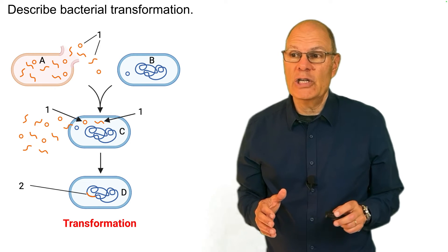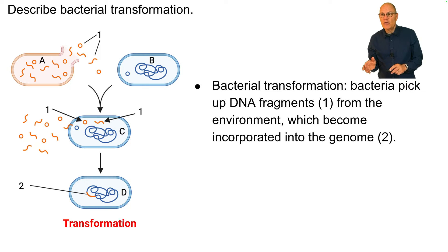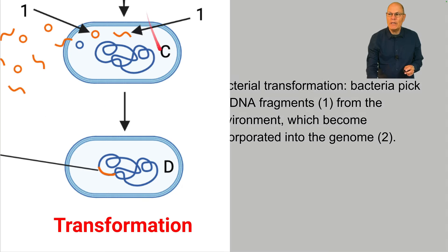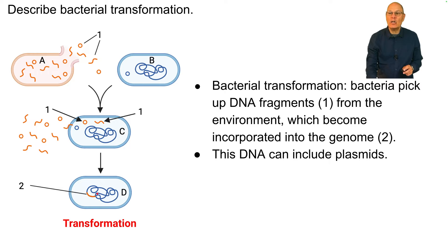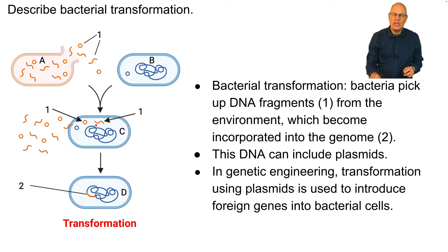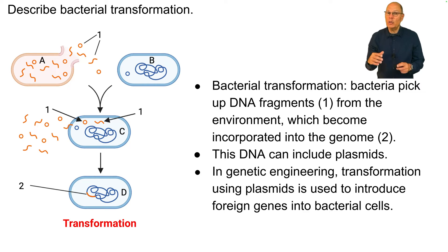Describe bacterial transformation. In bacterial transformation, bacteria pick up DNA fragments from the environment, and those DNA fragments enter into the cell and become incorporated into the genome. This DNA can include plasmids — here's a circularized piece of DNA, a plasmid, being incorporated into the cell. In genetic engineering, transformation using plasmids is used to introduce foreign genes, including human genes, into bacterial cells.